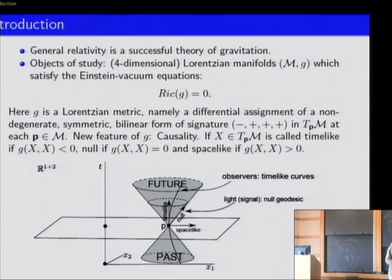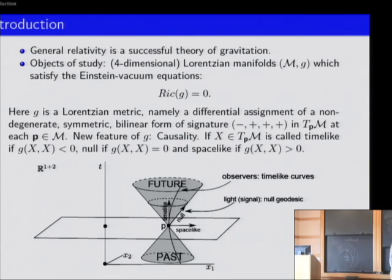Here I have a picture. At each point, all the null vectors satisfying this equation lie on a cone. The interior of the cone consists of all the time-like vectors, and the exterior consists of all the space-like vectors.